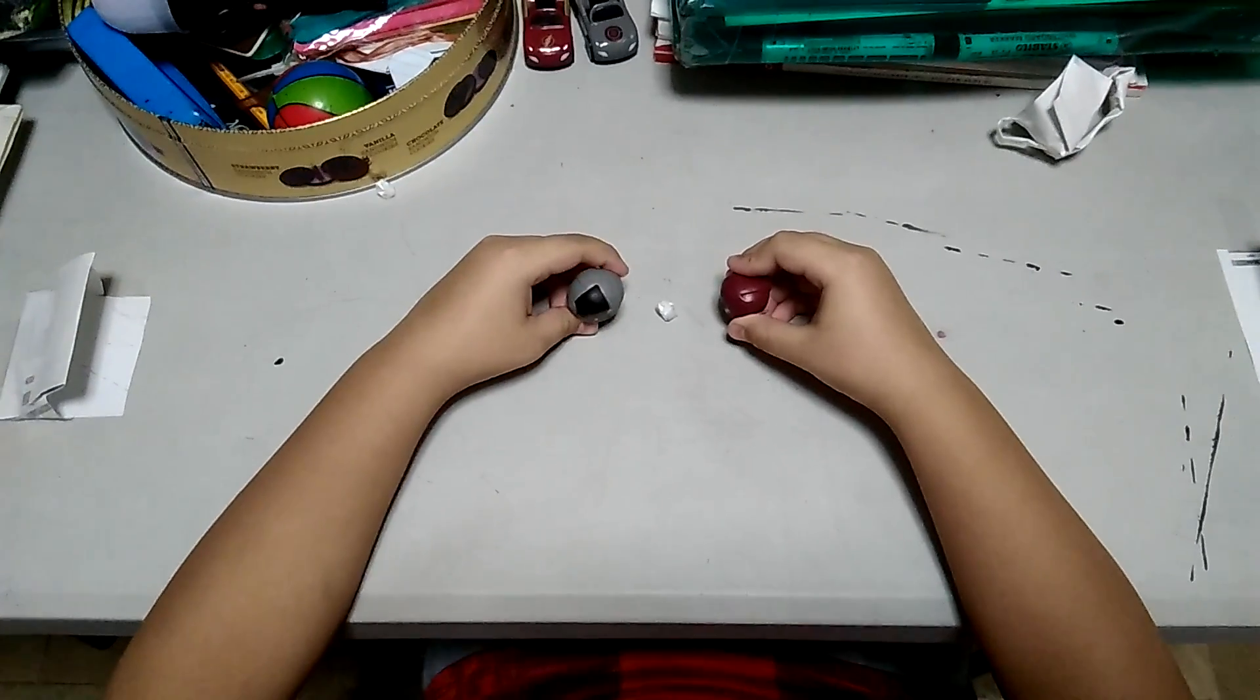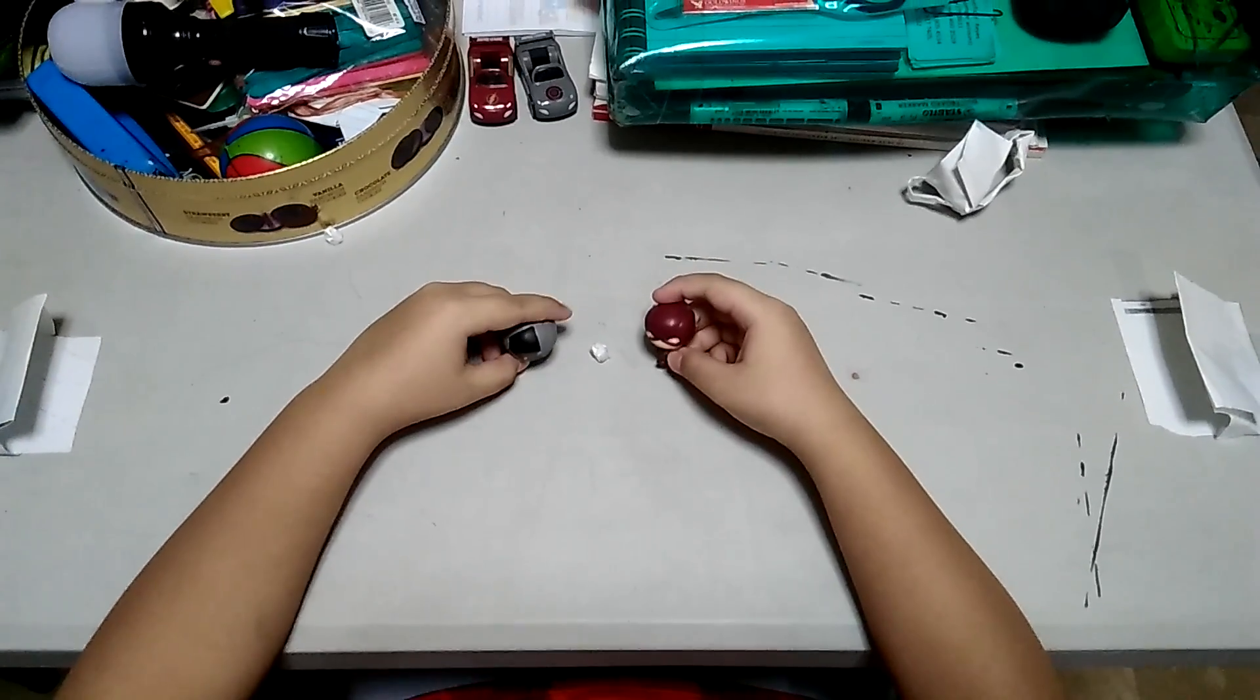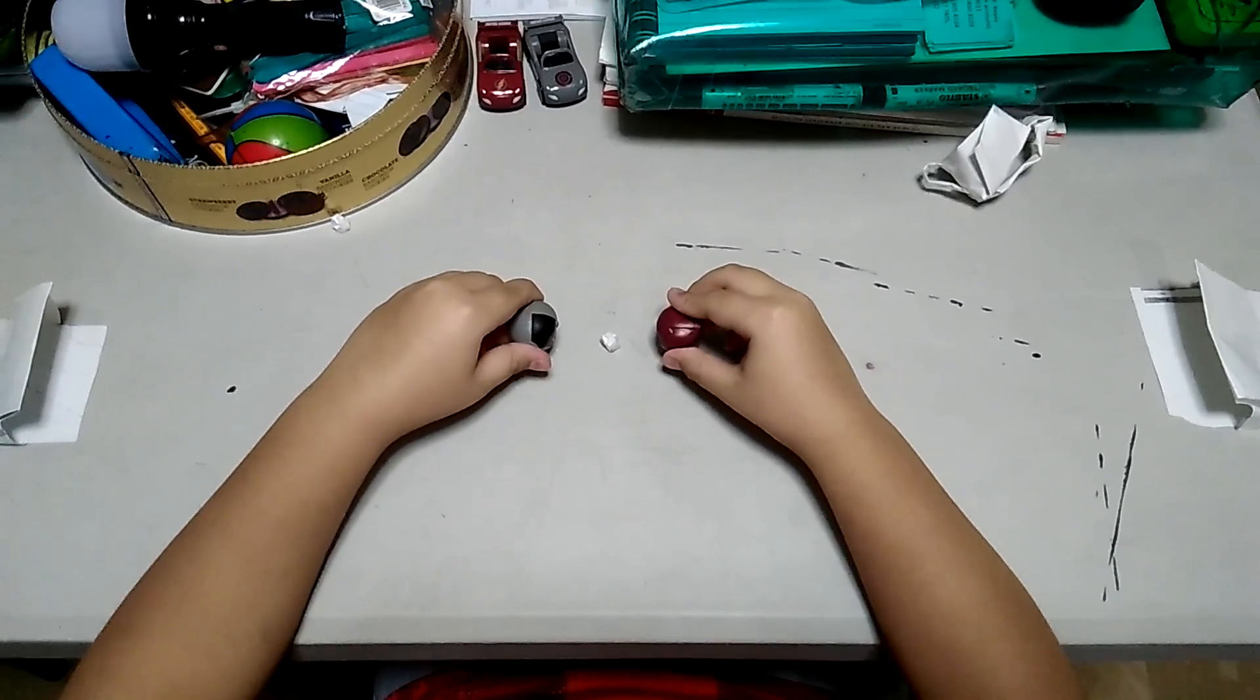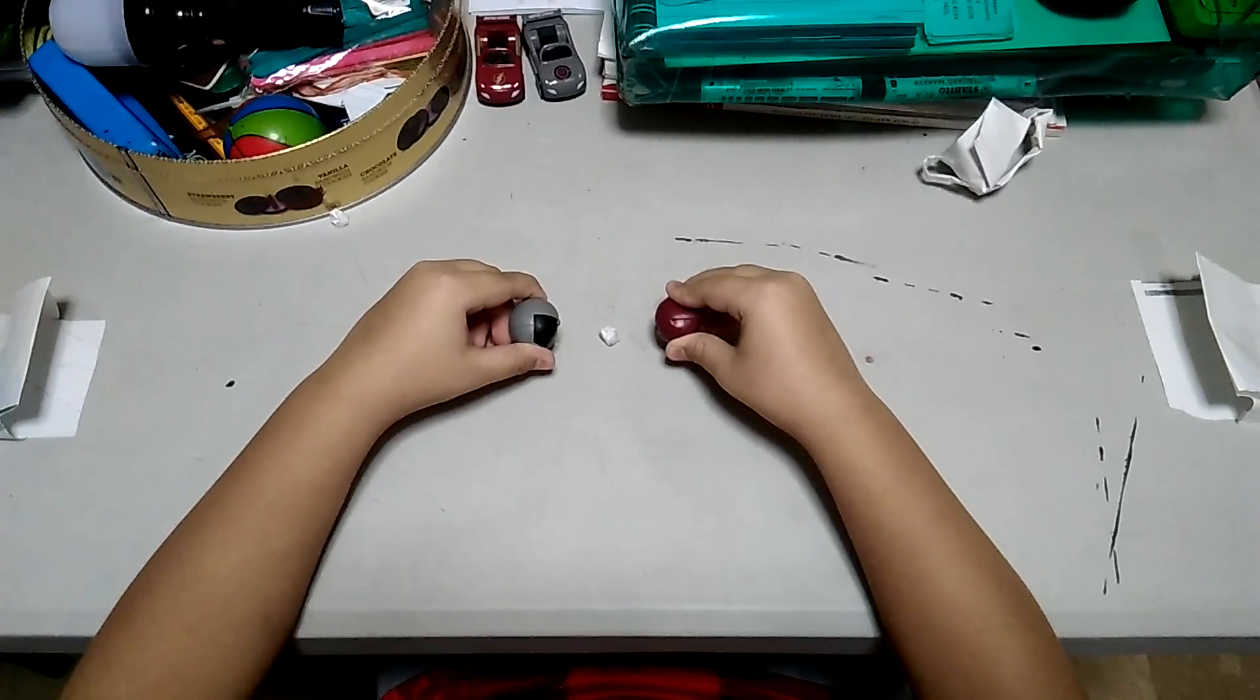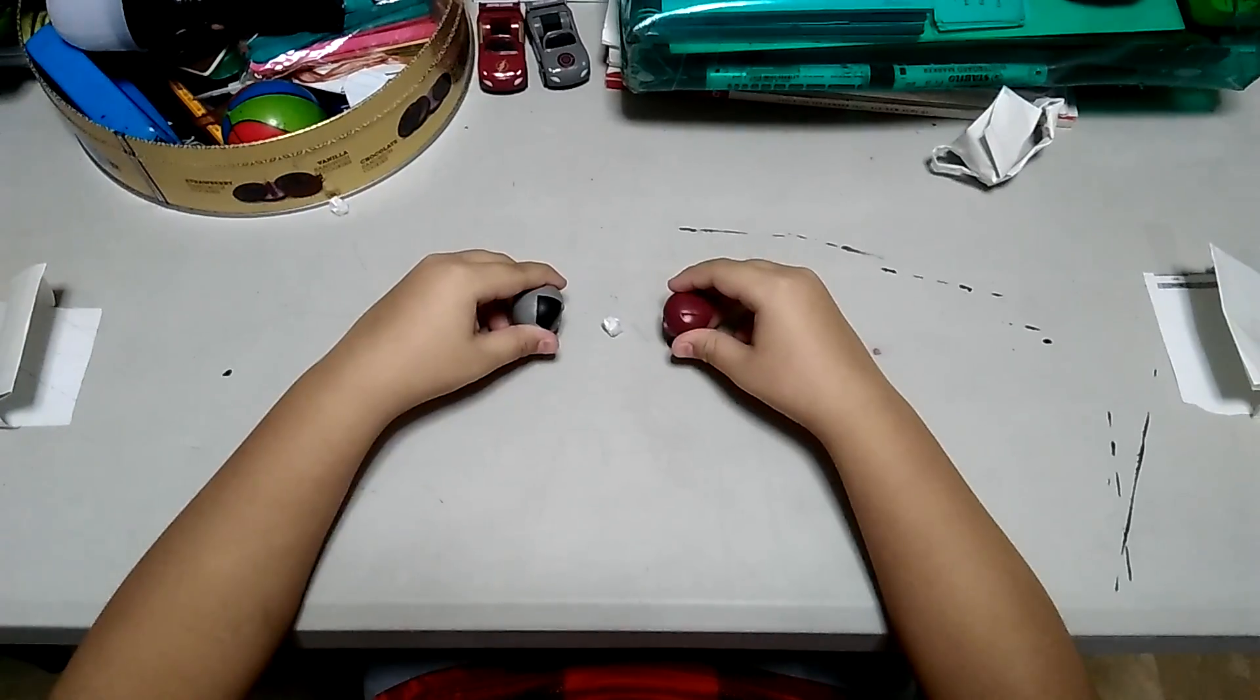In the other team we have Cyborg and in the other team we have Flash. The ball is in the center. The game will start in 3, 2, 1 and go.